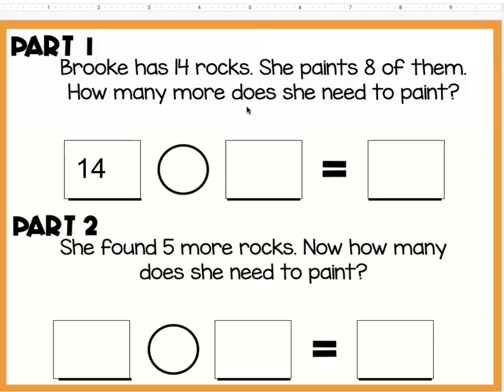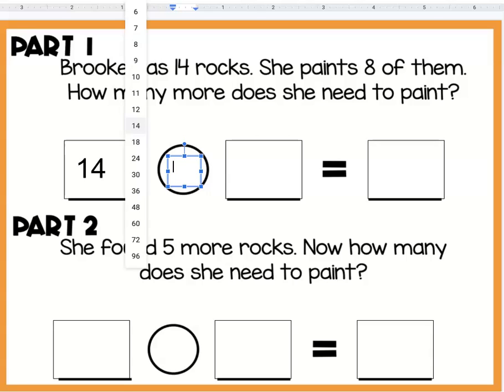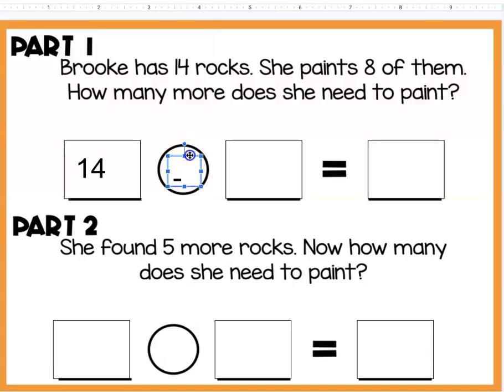We're trying to find out how many more. So we're taking away the ones that she's already painted, because that's not going to help us figure out how many more she needs to paint. We're going to do subtraction, taking away the ones that she's already painted, and that number was eight.